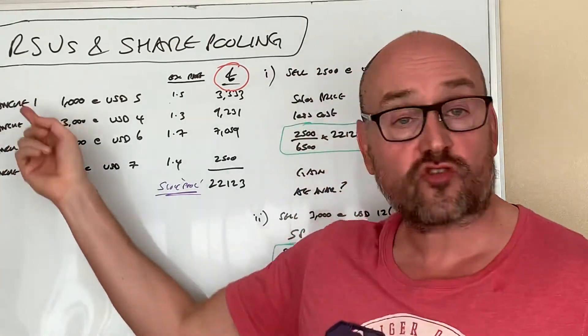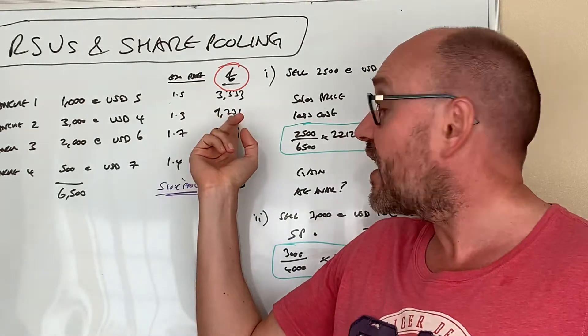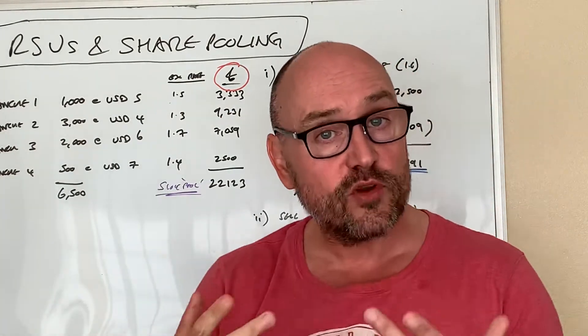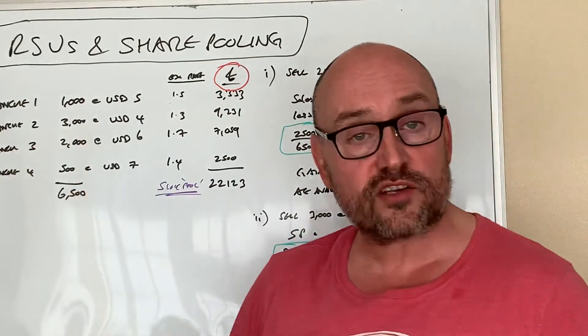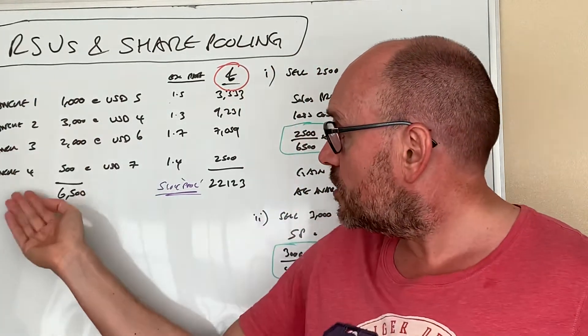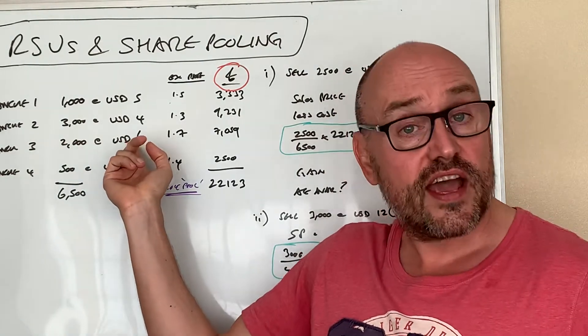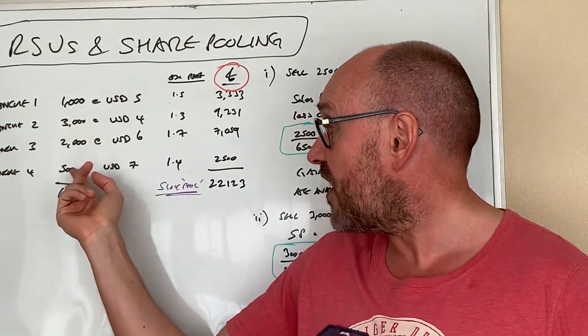Exchange rate changed to 1.3, so that's 9,231 pounds. Then we do the same thing for tranche three and tranche four, which could be a year down the line or two years, whatever it is. Two thousand shares, six dollars a share, exchange rate 1.7, and seven dollars at 1.4.